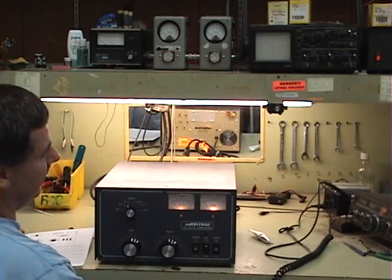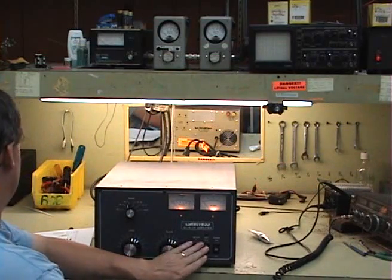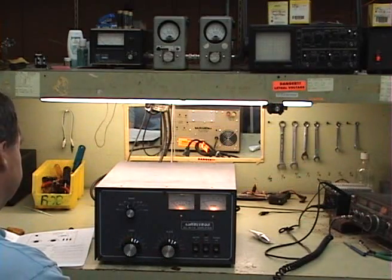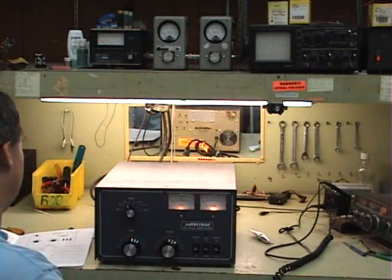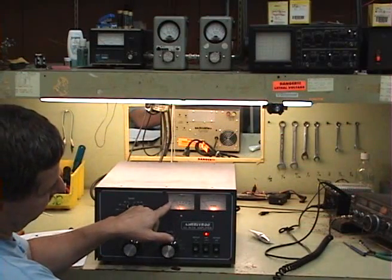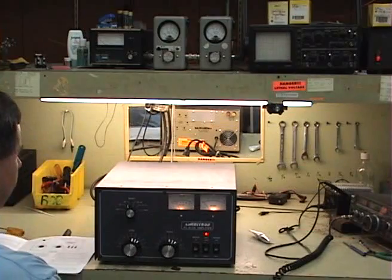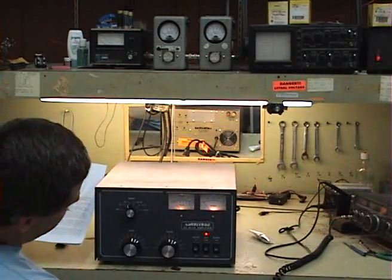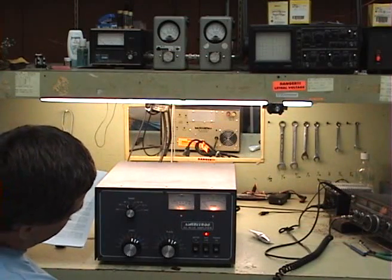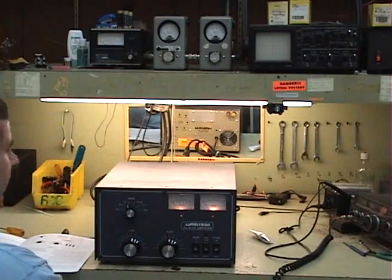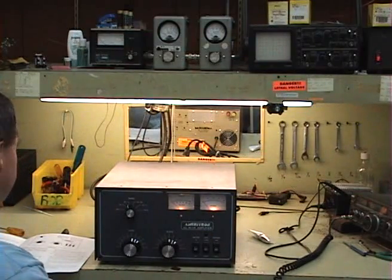And then key in your mic, with the switch of the amplifier in operating position, and key the mic. The plate current meter should rise according to what the meter says here. It says it should come up to 75 mils. In there, we're reading just below 100 mils, and it's got a 25% tolerance there it can be in.